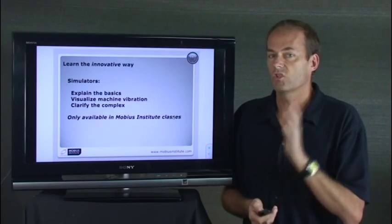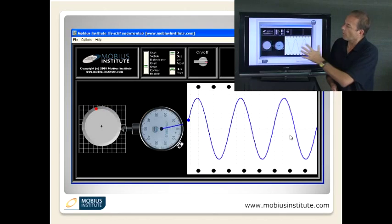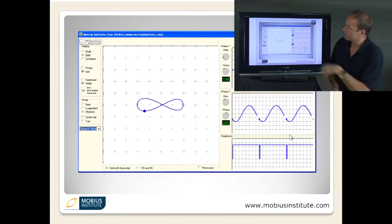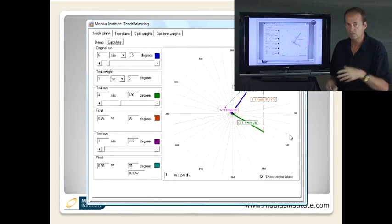The Mobius Institute simulators make this much easier to understand. We have developed over 40 programs that explain everything from the basics of where the waveform comes from, how the FFT is developed, how orbits work, how natural frequencies and resonance work.